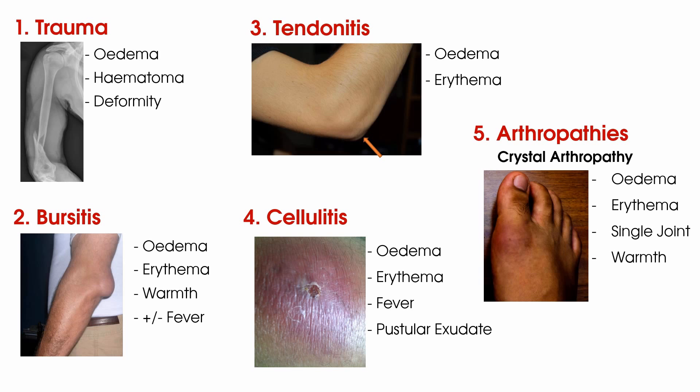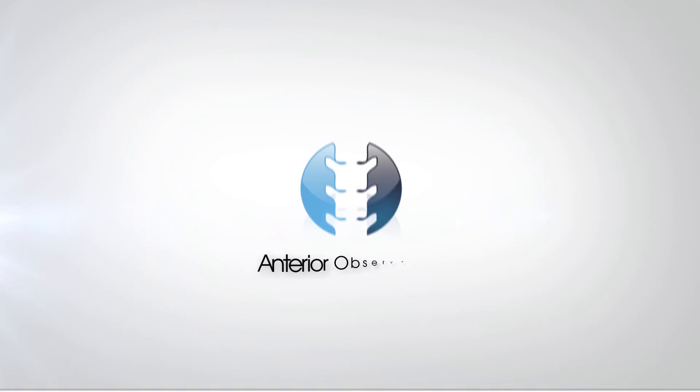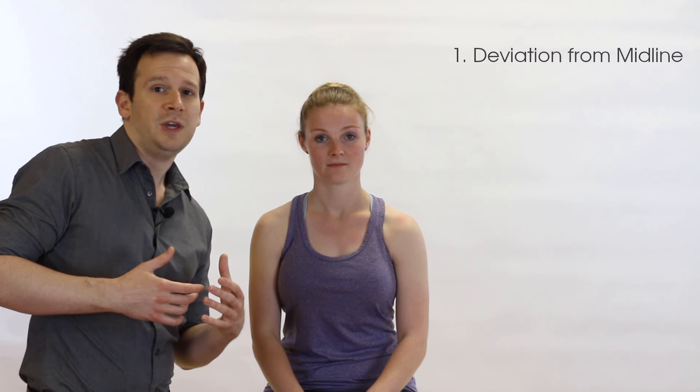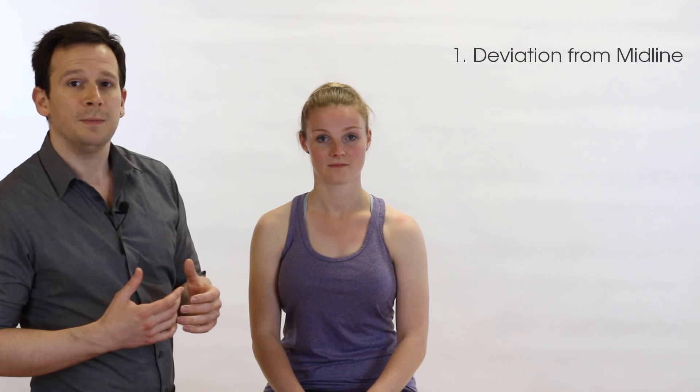So those are our inflammatory signs — let's get into the main video. Now we're going to look at observation of the shoulder joint in the anterior view. There are two key things we want to look at: one is a deviation from the midline and the other is the shoulder position.